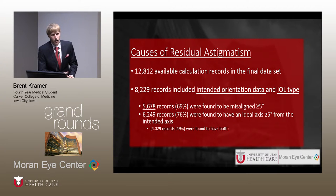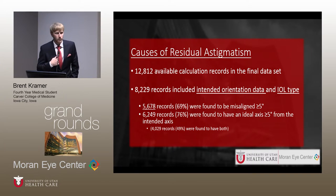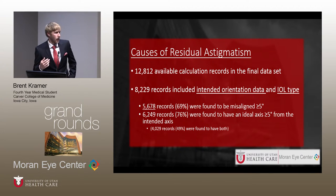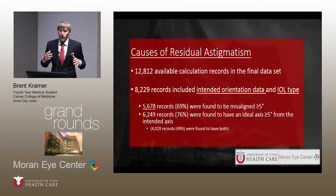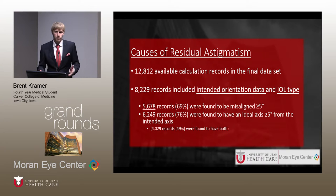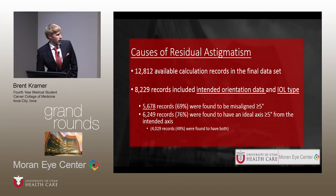This is a big take-home point: when dealing with residual astigmatism and thinking about rotating an IOL, it's wise to use toric back calculators such as astigmatismfix.com. For example, if you placed an IOL at 20 degrees and find it at 80 degrees at one month, you might assume rotating back to 20 degrees will fix the problem — but 20 degrees might not be the ideal location due to post-operative changes or earlier measurement error.